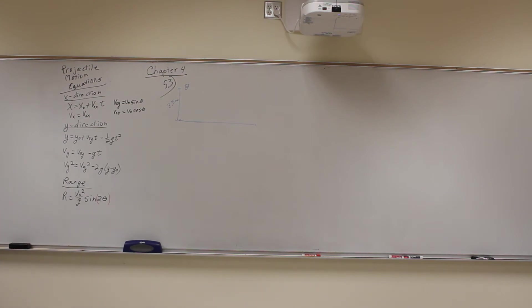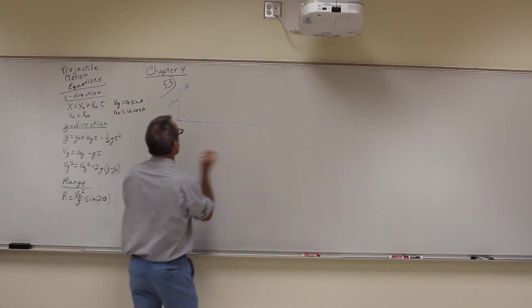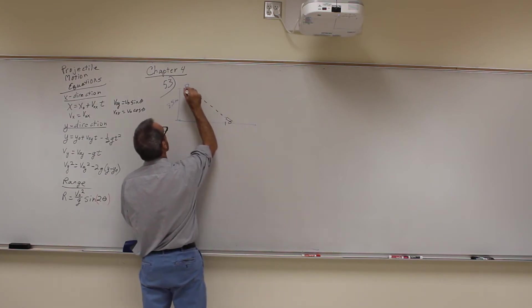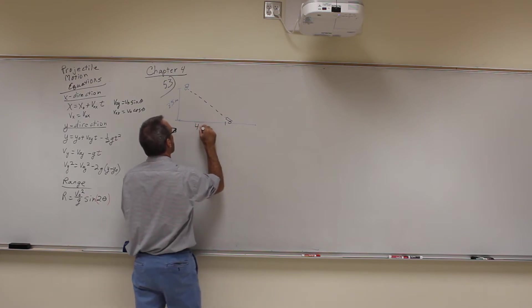And a compressed air cannon sits on the floor 4 meters to one side. So I'm going to go over here 4 meters and I have a compressed air cannon that's going to aim exactly at the ball. So it's aimed right at the ball. This is 4 meters here.